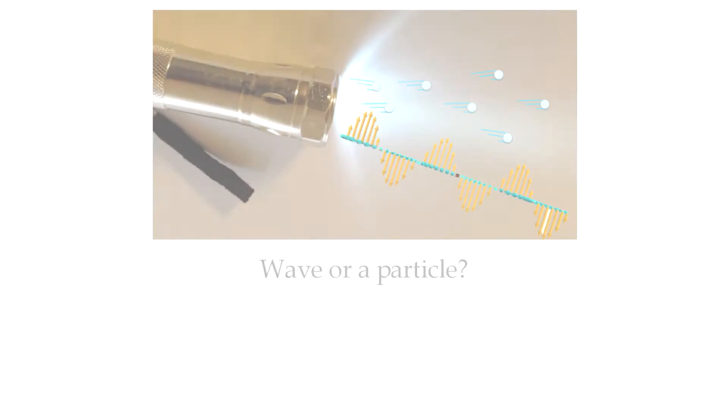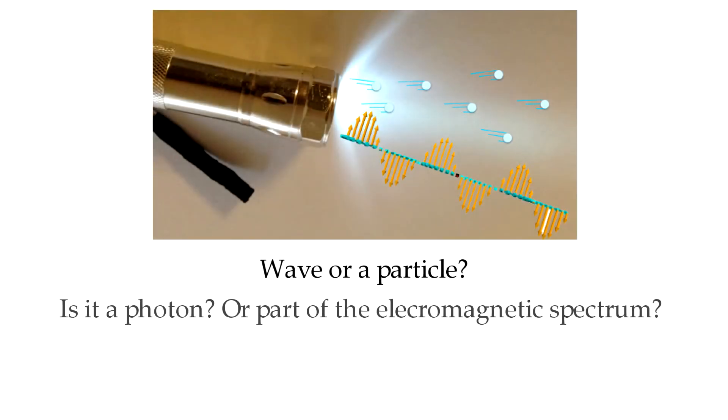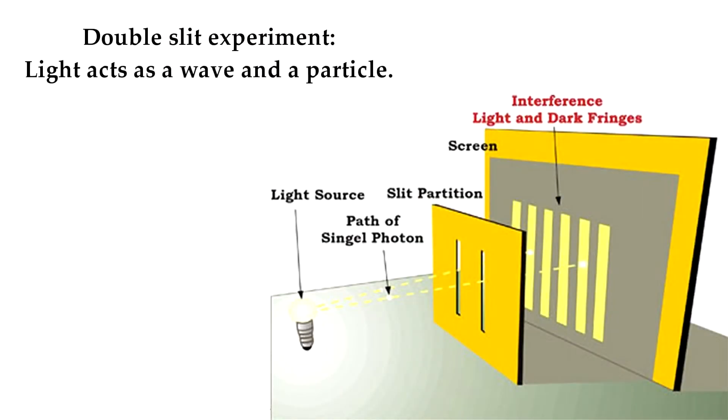We should also remember that we do not know exactly what light is. We use light every day, but we don't know exactly what it is. Is it a wave or a particle? Is it a photon or part of the electromagnetic spectrum? Well, actually it's both at the same time, but never been observed to act as both at the same time. So light is a very strange thing and we are still learning more and more about it every day.